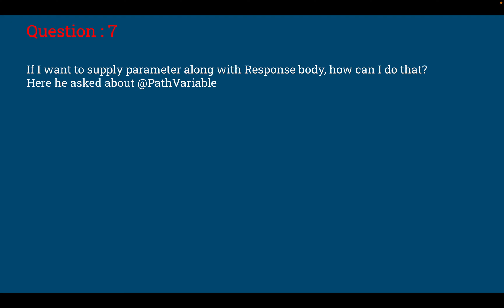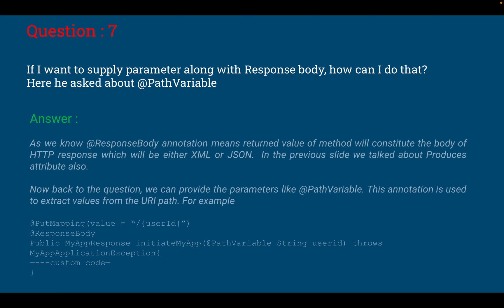Now question number 7: if I want to supply a parameter along with the response body, how can I do that? So here basically he asked about @PathVariable. The answer is: @ResponseBody annotation means the return value of the method will constitute the body of HTTP response, which will be either XML or JSON. In the previous slide we talked about the produces attribute also. Now back to this question, we can provide the parameter like @PathVariable. This annotation is used to extract values from URI path. For example, you can see the sample code where we have passed @PathVariable as a parameter.